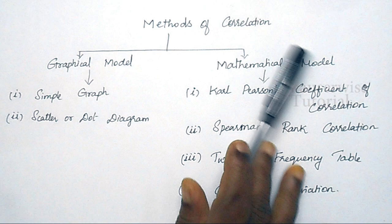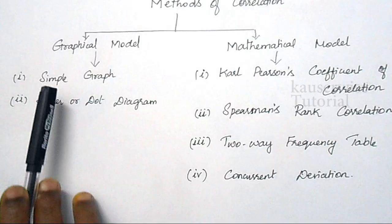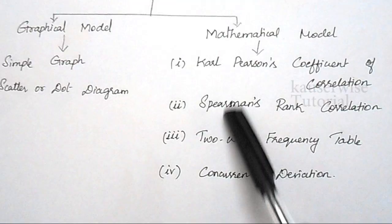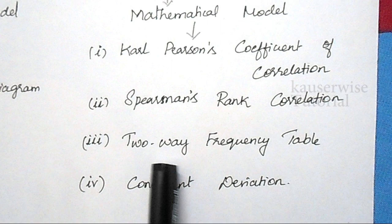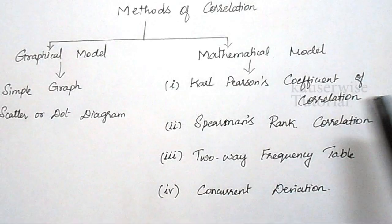Now let us see the methods of correlation. Generally, the methods of correlation are divided into two categories. The first one is graphical model and the second one is mathematical model. Under graphical model, there are two methods: the first one is simple graph method and the second one is scatter or dot diagram. Under mathematical model, there are four types: Karl Pearson's coefficient of correlation, Spearman's rank correlation, two-way frequency table, and concurrent deviation.